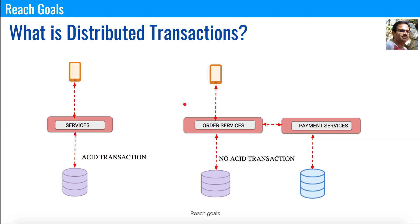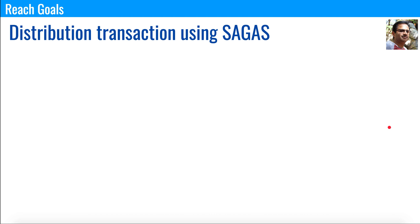So how are we going to achieve this? There is a very interesting design pattern called Sagas, which we can use to apply distributed transactions across tables located at different locations. Let's see how distributed transactions using the Sagas design pattern work in a microservice-based architecture.